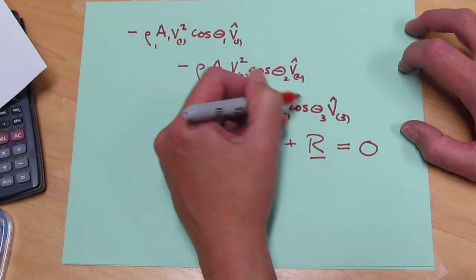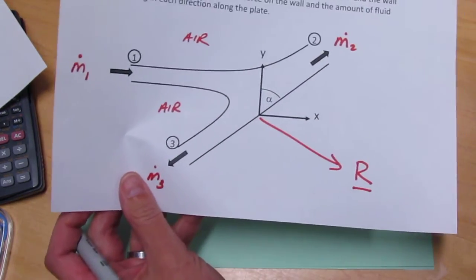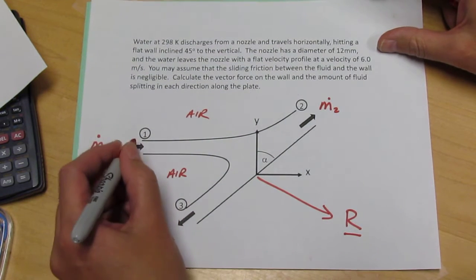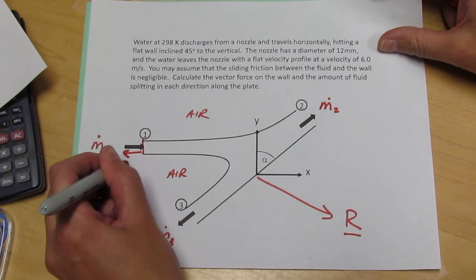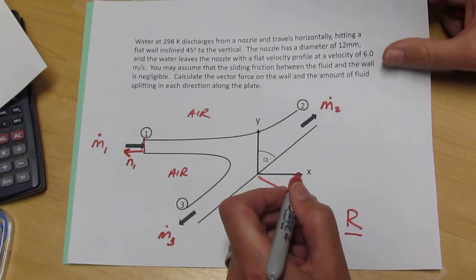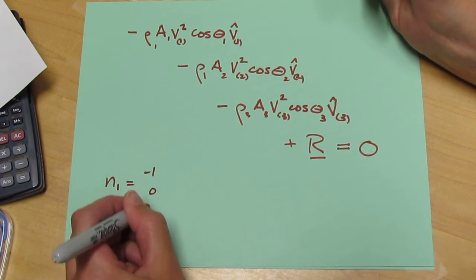So we need to know these various angles, and to do that we need to go back and look at the drawing. So what we have here is this surface, and so the outwardly pointing unit normal is N1, and N1 is just minus EX, so N1 is equal to minus 1, 0, 0.